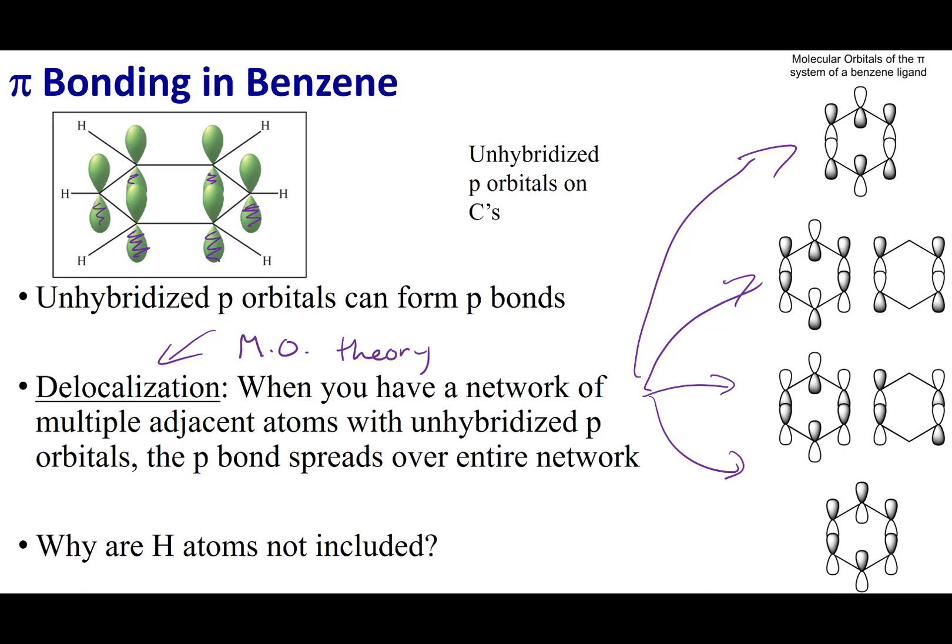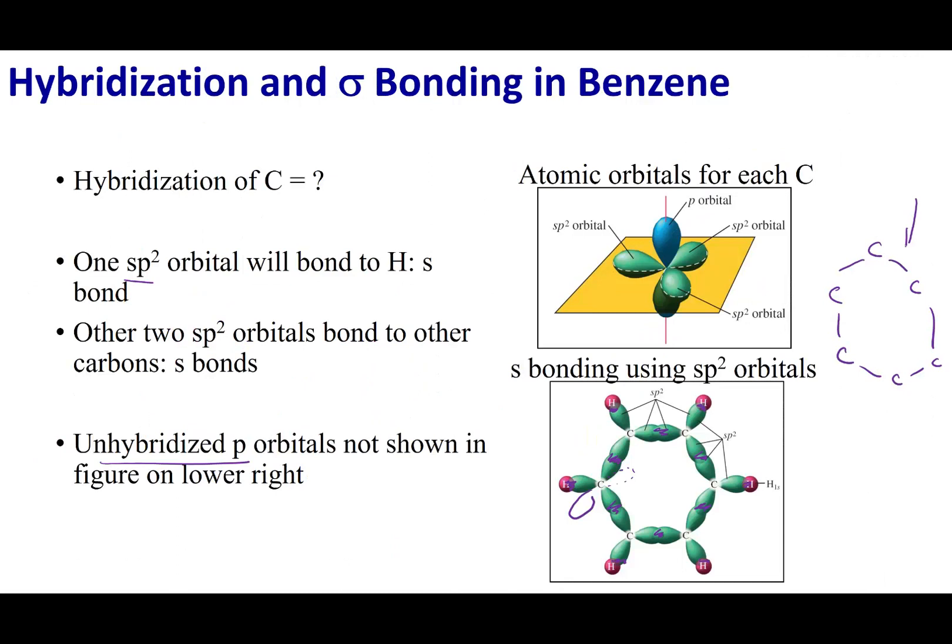When we do Lewis dot structures and hybridization, they call this localized electron theory. They do well when you lock electrons in one place. Meaning they are good when I'm looking at bonds that are not in resonance.